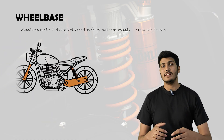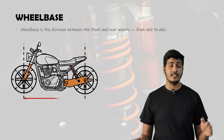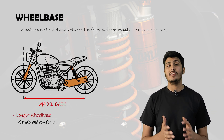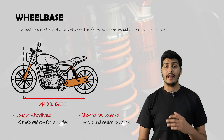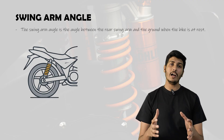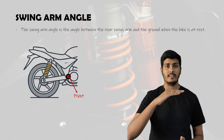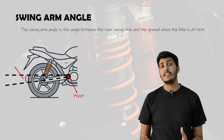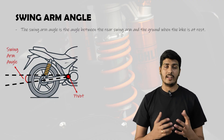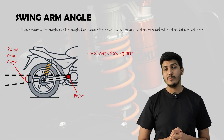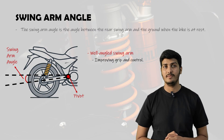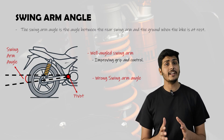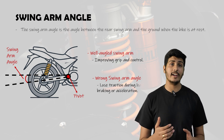The next term is wheelbase — the distance between the front and rear wheels from axle to axle. A larger wheelbase gives the bike a stable and comfortable ride, while a shorter wheelbase makes the bike more agile and easier to handle, especially in tight corners. The final term is swing arm angle — the angle between the swing arm and the ground when the bike is at rest. It affects how the rear suspension reacts under acceleration and braking. A correct swing arm angle helps the rear tire stay in contact with the ground, improving grip and control. If the angle is wrong — too steep or too flat — the rear tire may lose traction under hard braking and acceleration.